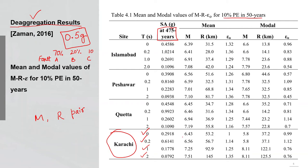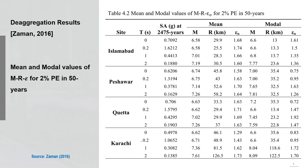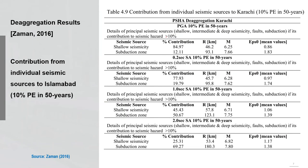For example, magnitude 6.42 at a distance of 53.2 kilometers is the mean M-R pair for PGA hazard, and there is also the modal M-R pair for PGA. These are directly the results of the de-aggregation. There is a similar table for MCE level. This table tells us the percentage contribution of each seismic source and the R and M pair contributing to it.